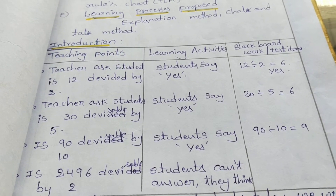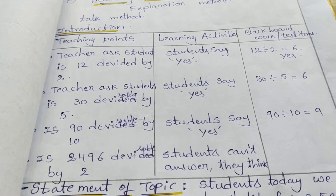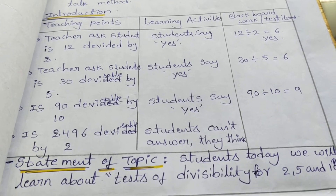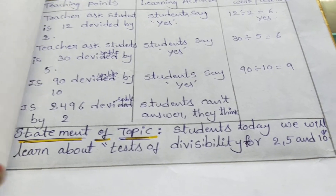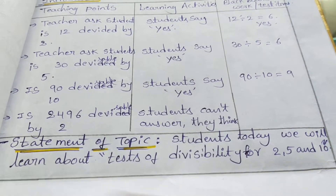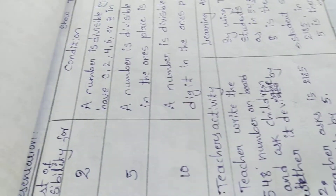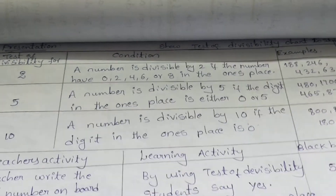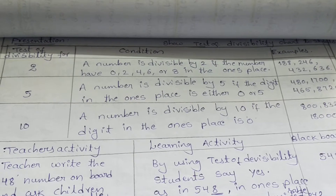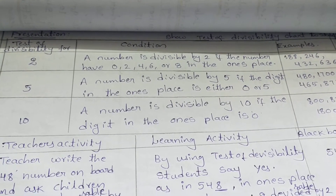The teacher asks students: 'Is 12 divisible by 2?' This introduces today's topic — the test of divisibility for 2, 5, and 10. A tabular format is then shown to the students. The rule for divisibility by 2 is introduced: a number is divisible by 2 if...